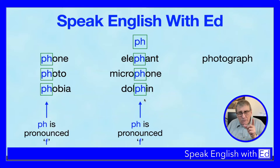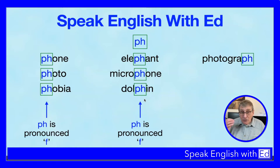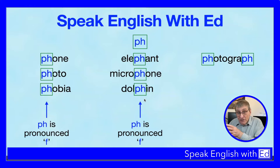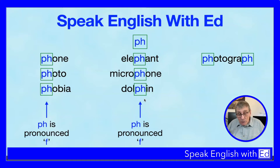But what happens when you get PH at the end of a word? It's going to sound exactly the same — F. Take the word 'photograph.' This word actually has PH at both ends — at the beginning and at the end — so it contains two digraphs. Both are pronounced with an F sound: photograph.